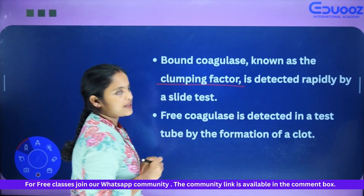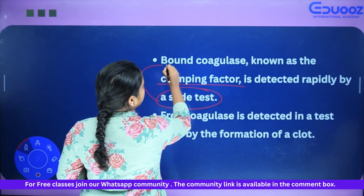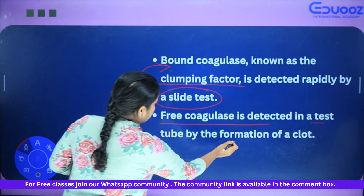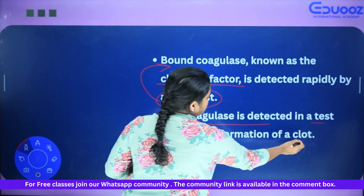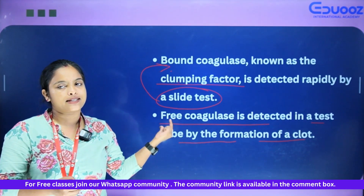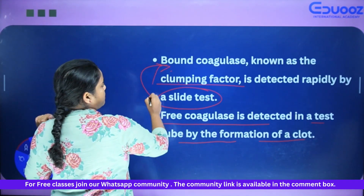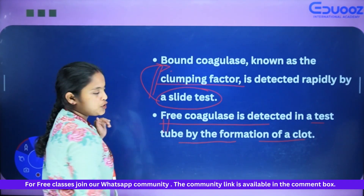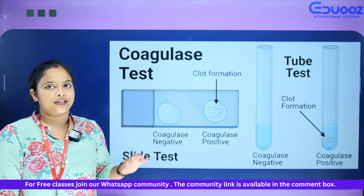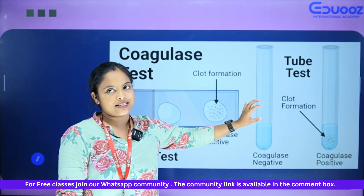Bound coagulase is known as the clumping factor, detected rapidly by the slide test. Free coagulase is detected by the tube test, resulting in formation of a clot. Slide coagulase corresponds to bound coagulase, and free coagulase corresponds to the tube test.